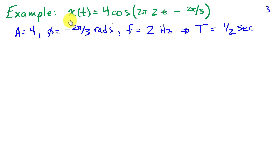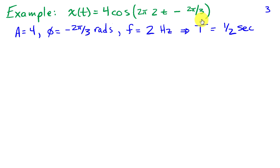Let's take an example where x(t) = 4·cos(2π·2t − 2π/3). Identifying the parameters: amplitude A = 4, phase φ = −2π/3 radians, and frequency f = 2 Hz. Since the frequency is 2 Hz, there are two cycles per second, meaning one cycle every half second, so the fundamental period T = 1/2.